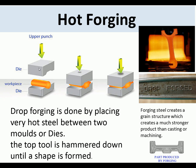Drop forging is done by placing very hot steel between two molds or dies. The top is hammered down until a shape is formed. By forging steel we create a grain structure which makes a much stronger product than casting or machining, as the metal is actually shaped by hammering.